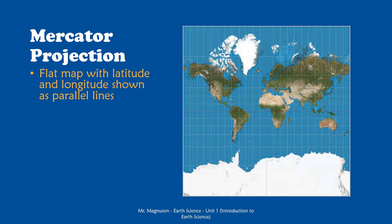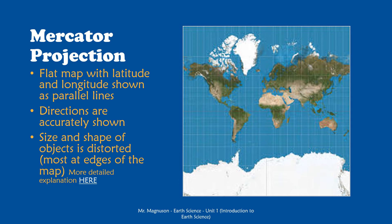So there is a little bit of distortion going on to get those lines to appear parallel on the Mercator projection. Now one thing that is accurate is directions. If you are standing in a spot and you use a compass to figure out which direction on the map you're pointing, left on the map is left in real life, and right on the map is right in real life. So directions are shown accurately, and this makes them very useful for people who are trying to find their way around, whether you're a sailor or a hiker.